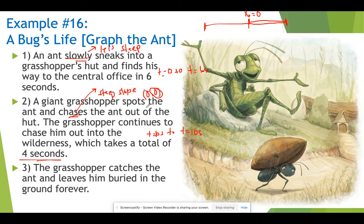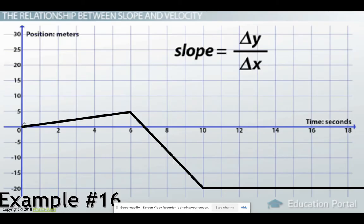The grasshopper catches the ant and leaves him buried in the ground forever. Unfortunately the ant stops moving, so velocity is zero — meaning the slope is zero. That's going to occur for the rest of our time interval, from t equals ten to eighteen seconds. On the graph, we start moving in the positive direction from the origin for six seconds. Then the ant sprints with a steep slope, passing the origin and moving into negative displacement. The ant is caught and remains stationary forever.